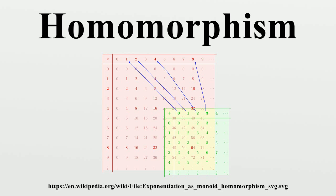In this setting, a homomorphism f: A → B is a function between two algebraic structures of the same type such that f(μ_A(a₁,…,aₙ)) = μ_B(f(a₁),…,f(aₙ)), for each n-ary operation μ and for all elements a₁,…,aₙ.